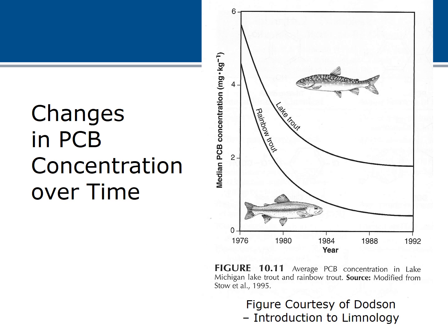Over time, the concentration of toxic materials in the environment can decrease, but it's a slow decline. You can see changes in PCB concentrations of lake trout and rainbow trout over time — immediately after removing the source, concentrations go down, but they still persist at a low level for a long period of time. This is a pollutant that can have persistent, long-lasting effects.